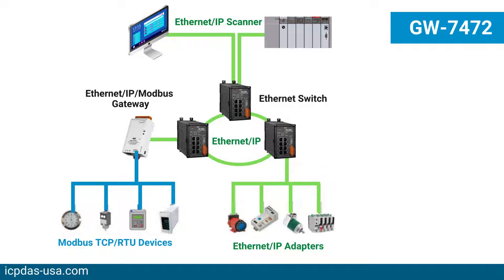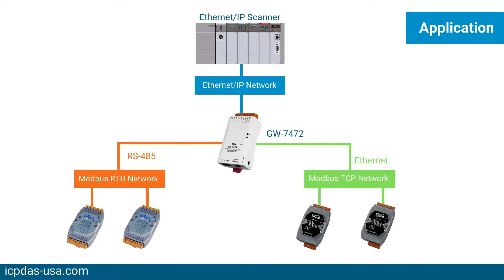The output data transmitted by the EtherNet/IP scanner is updated to the registered data of Modbus RTU slaves and Modbus TCP servers via the GW7472. These modules can also scan or map registered data from EtherNet/IP devices in exchange with Modbus registers.